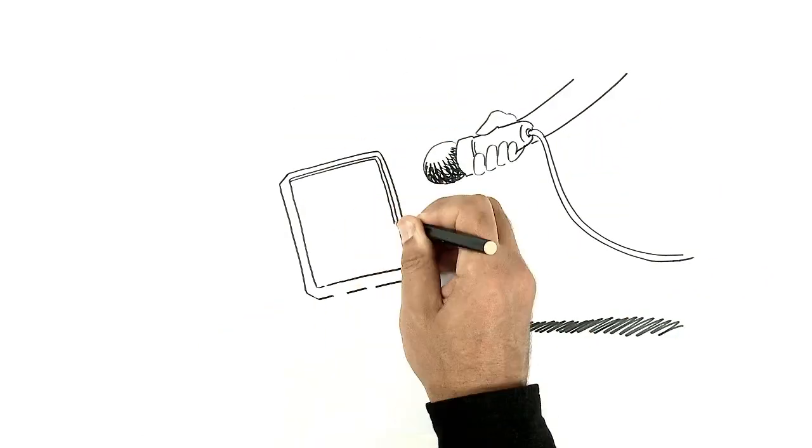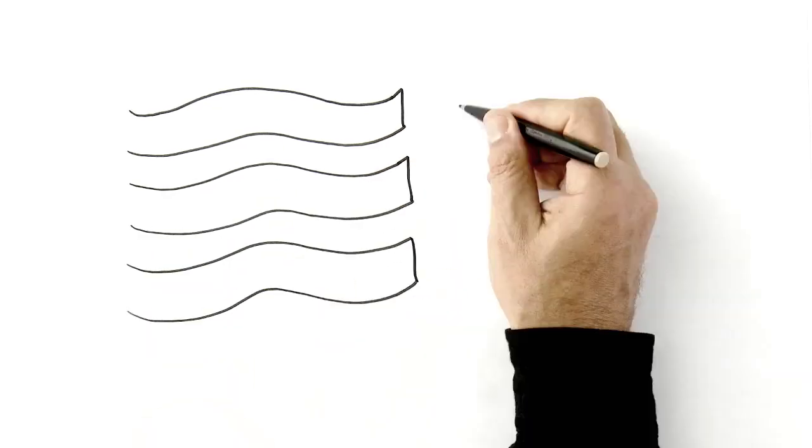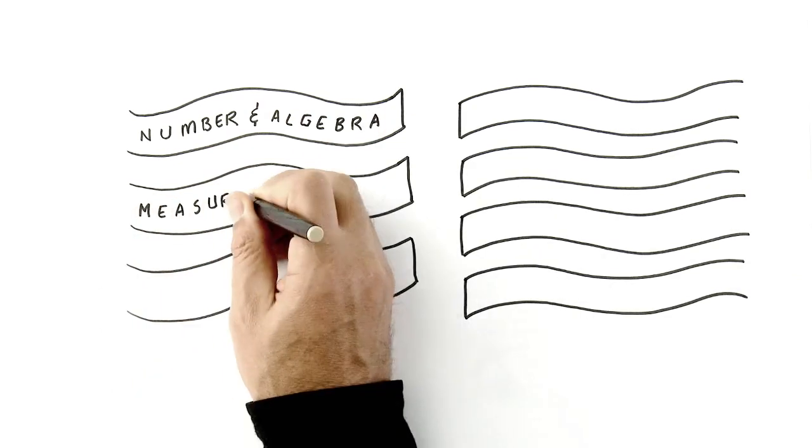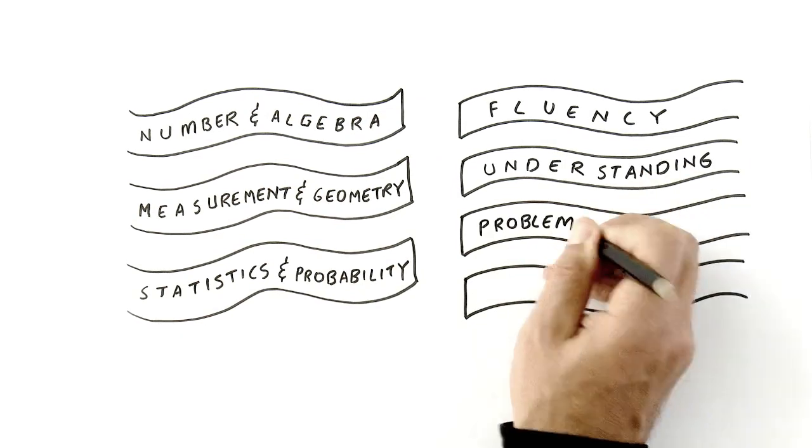So how is this communicated in the Australian Curriculum for Mathematics? When we look at the Australian Curriculum for Mathematics, we see three content strands and four proficiencies. The proficiencies describe how the students should engage with the content.